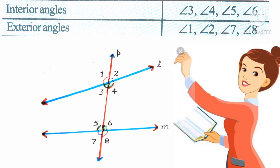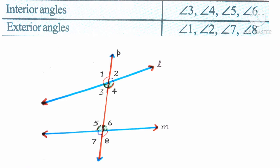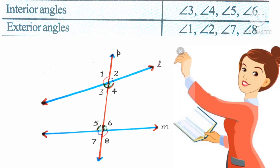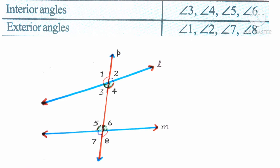What are exterior angles? The angles which lie outside these two lines are called exterior angles. Here in this figure, there are angles 1, 2, 7 and 8.